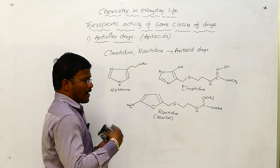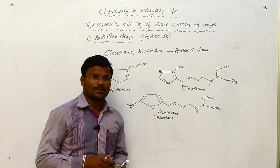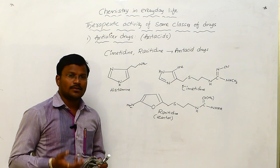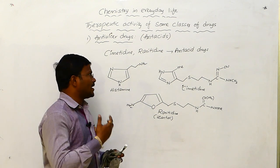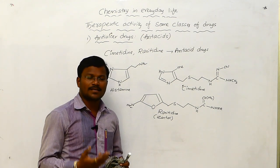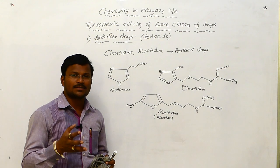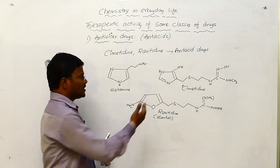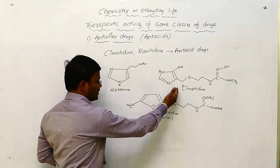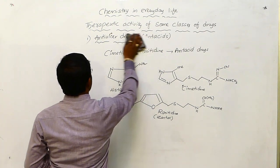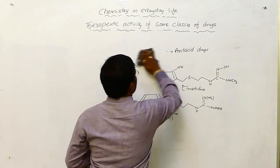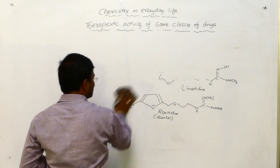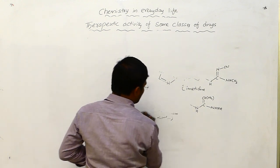Anti-acid drugs are anti-ulcer drugs. The histamine receptors are responsible for the over-secretion of HCl. The use of cimetidine and ranitidine, which are called as anti-acid drugs, can block the activity of histamine receptors and stop the over-secretion of HCl. So this is the structure of cimetidine and ranitidine.